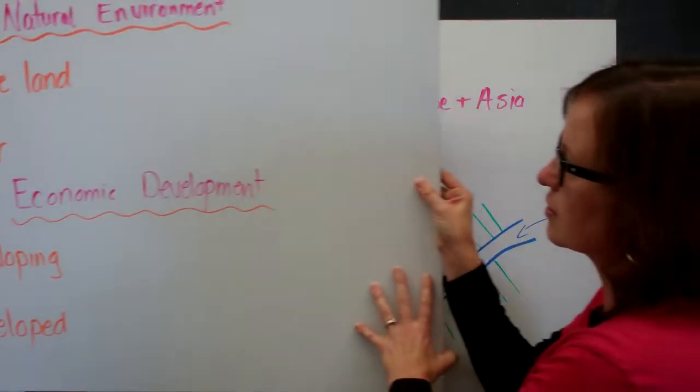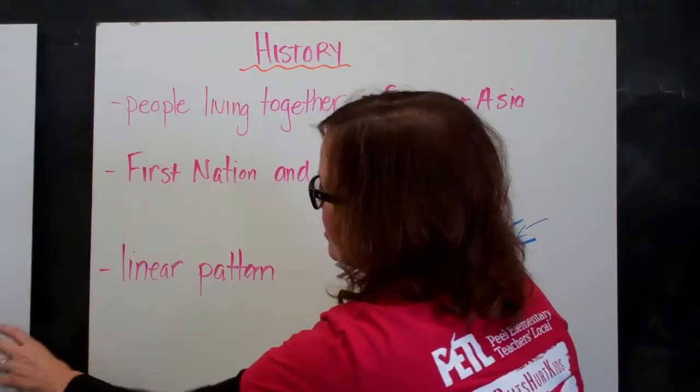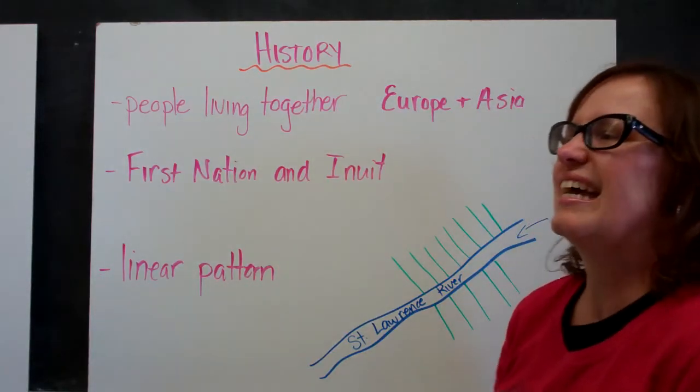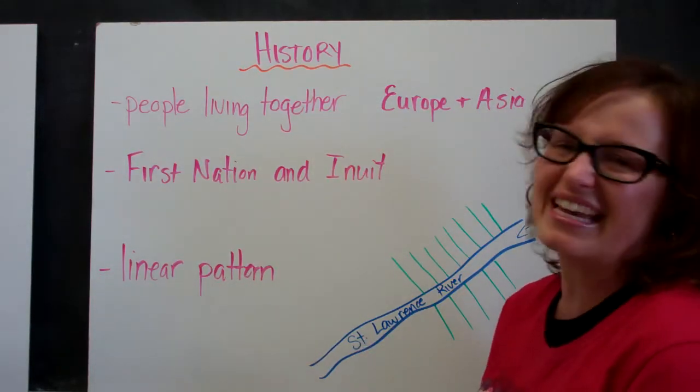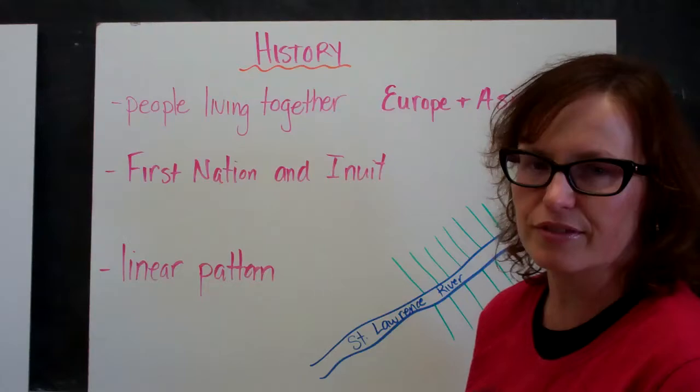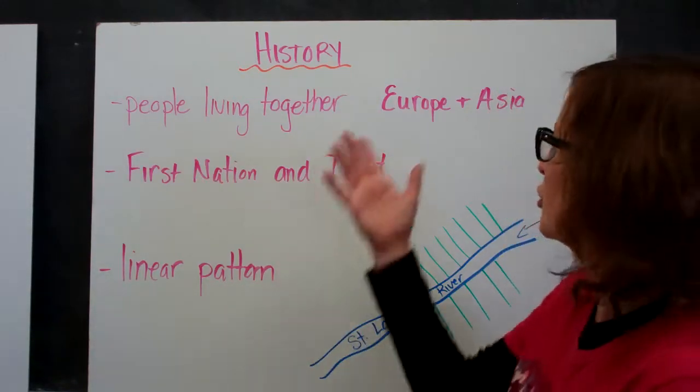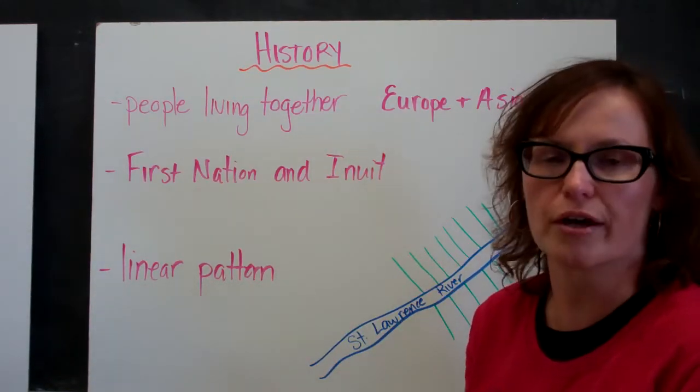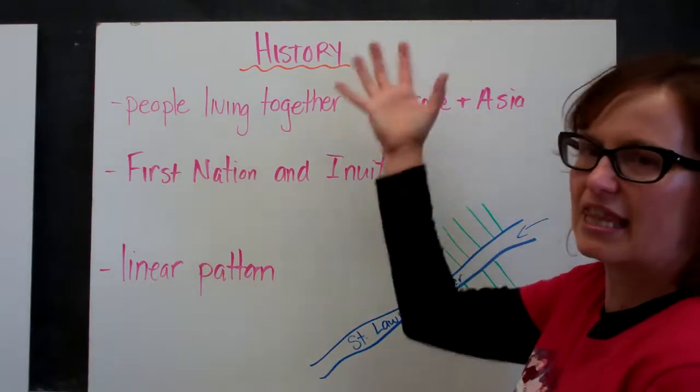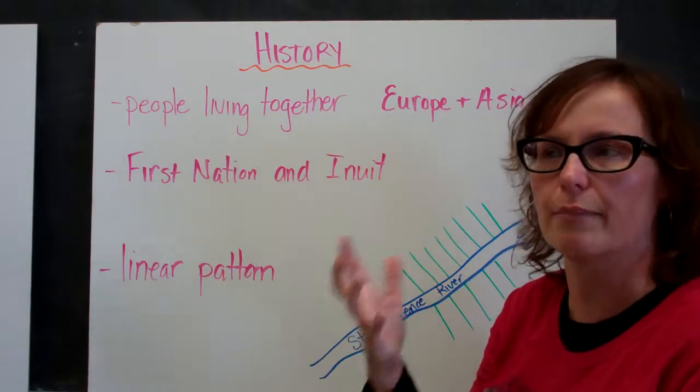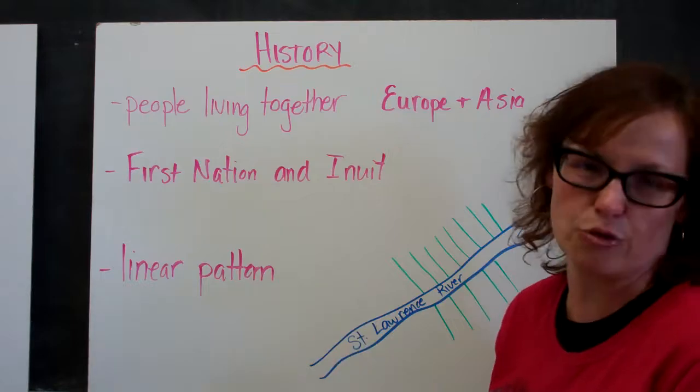And the last pattern is around history. If people have lived together in an area for a long period of time, there tends to be a higher population there. Europe and Asia are strong examples of that. People have been living in these areas for a long time, so their population density is greater.